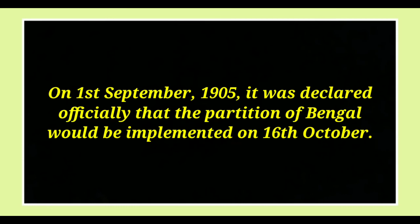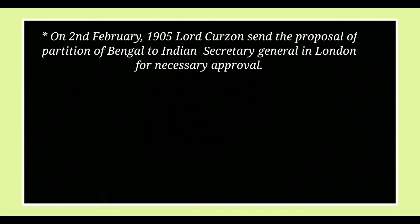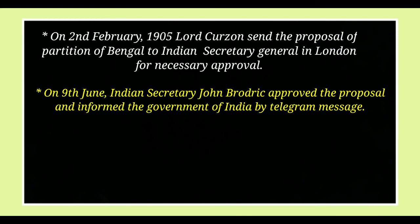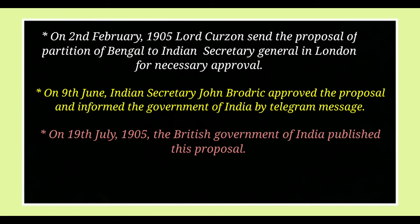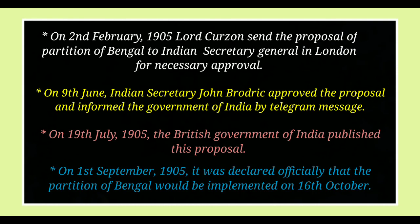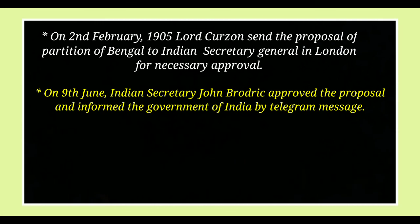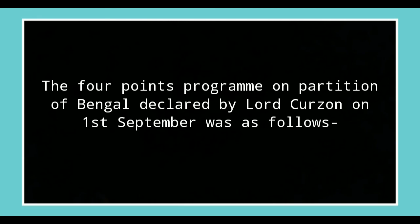On 1st September 1905, it was declared officially that the Partition of Bengal would be implemented on 16th October. Lord Curzon sent the proposal on 2nd February 1905; Indian Secretary John Broderick approved it on 9th June and informed by telegram; the proposal was published on 19th July 1905; and on 1st September 1905 it was officially declared that the Partition of Bengal would be implemented on 16th October.